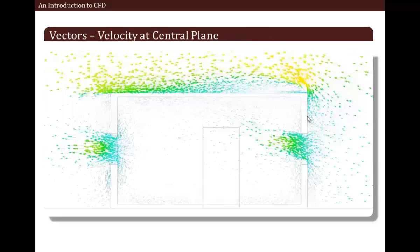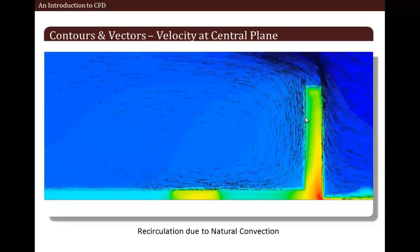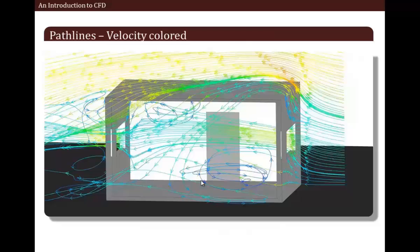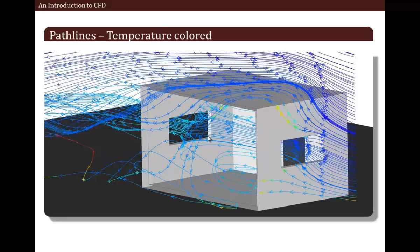Now let's see a few vector plots — this is a velocity plot colored by velocity magnitude. Here we have a combination of vectors and contours both based on velocity magnitude. In this picture we can see the flow circulation caused by natural convection. The solar loading effects of the sun rays coming from the window are clearly visible. Now let's see a few path lines — here we can see the flow distribution with velocity-colored path lines. In the next one, we see temperature-colored path lines. It is clearly visible that air at ambient temperature is entering the room but gets heated up due to solar loading and exits the room with a higher temperature.